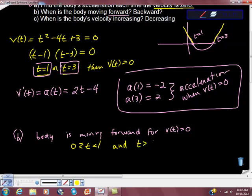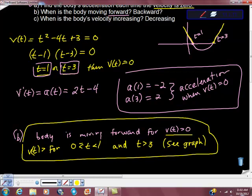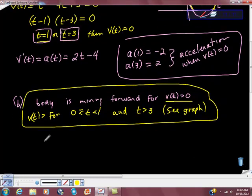And t is greater than 3. You can write a little note to them, see graph. And here's my proof. If the body is moving forward for v(t) > 0, and then I say v(t) > 0 for these values, and there is my answer. Okay, so that's part B. Now to part C.